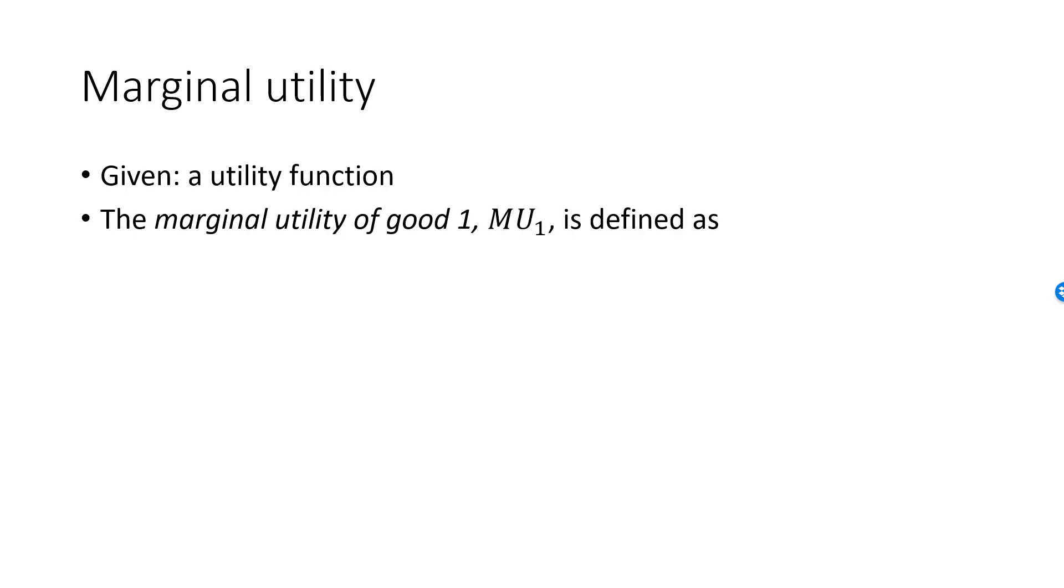The marginal utility of good 1, denoted by MU1, is defined as MU1 equals the partial derivative of u with respect to x1. The marginal utility of good 2, MU2, is defined as the partial derivative of u with respect to x2.